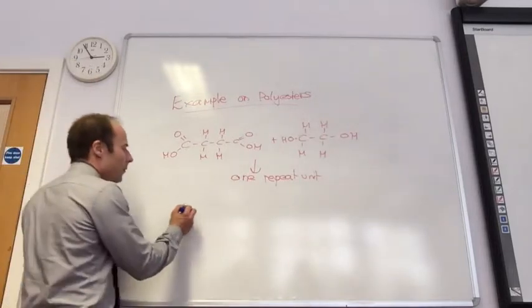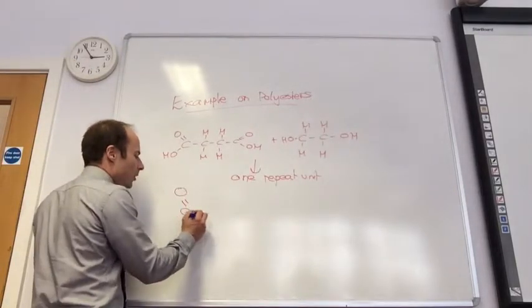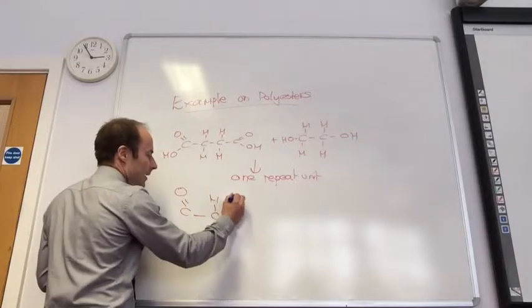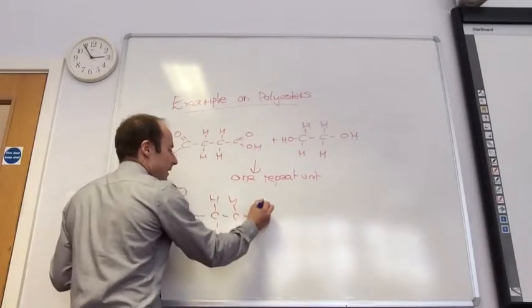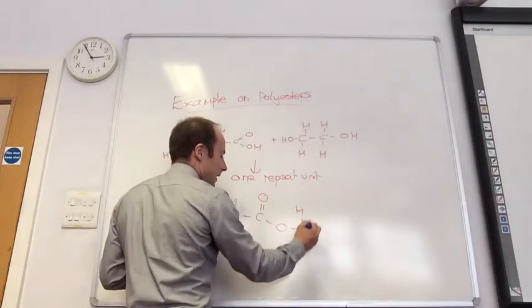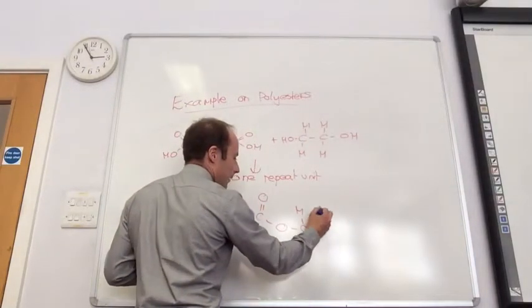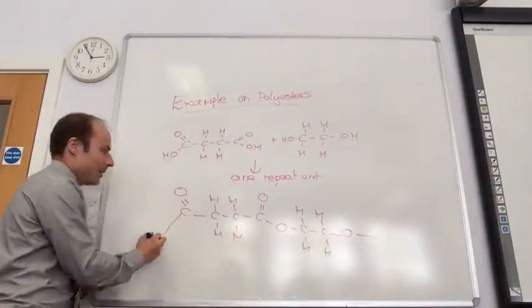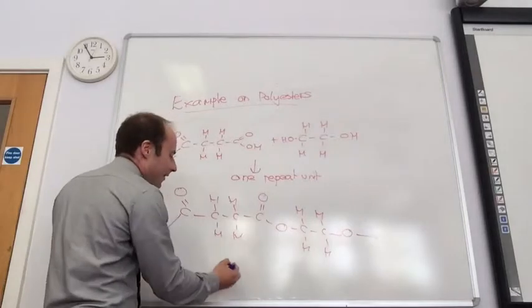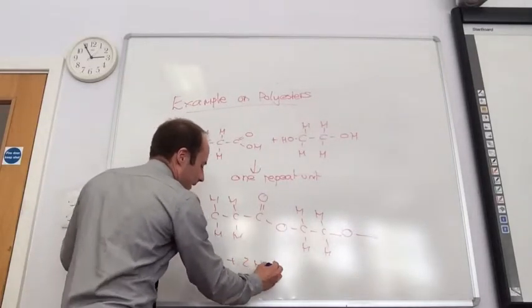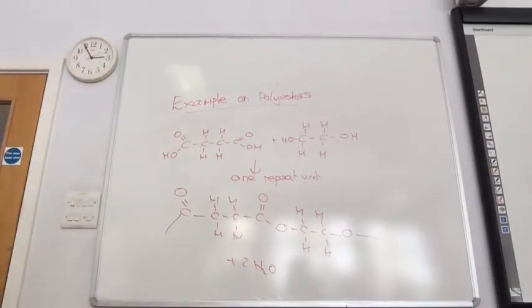So you've got C double bond O, CH2, CH2, CH2, CH2 going on there, and then it ends with an O there, which means it goes there, like so. And if this was the case, it would actually be two H2s that are actually in the middle ones.